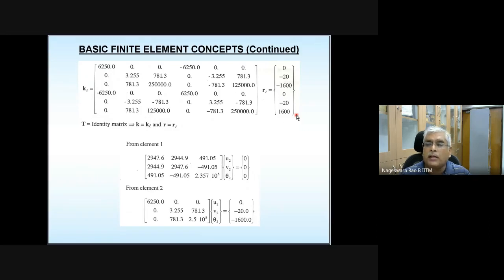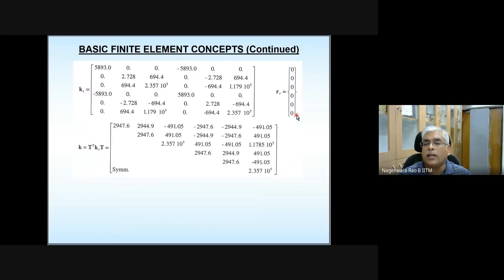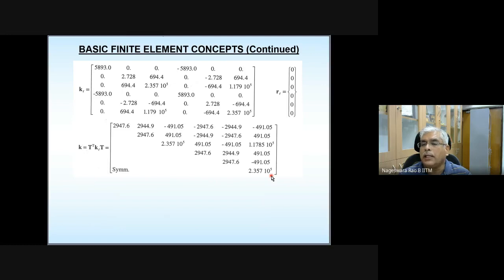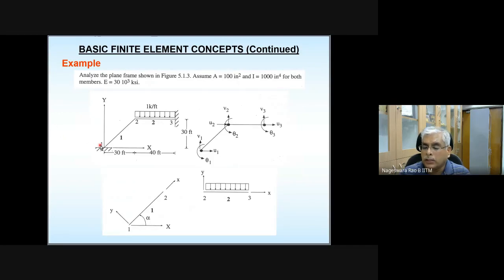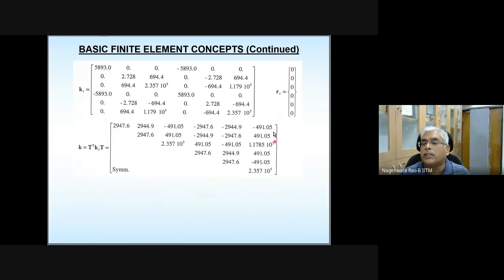For element 1, since the first node is fixed, that portion is not in the reduced stiffness matrix — only the bottom 3×3 corner goes into the reduced equation system. For element 2, with local node 1 being the common node, the top 3×3 portion contributes to the reduced equation system. Combining contributions from element 1 (bottom corner) and element 2 (top corner), you get the reduced equation system.